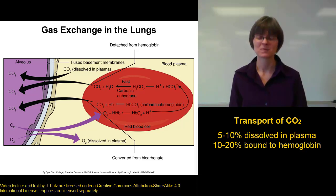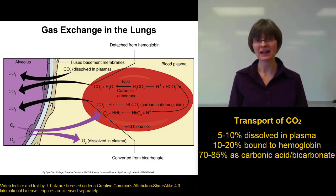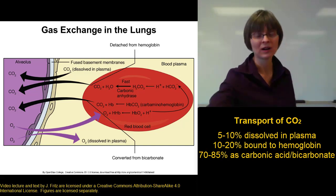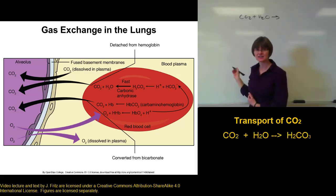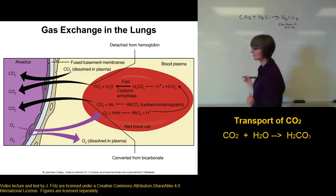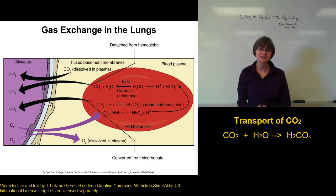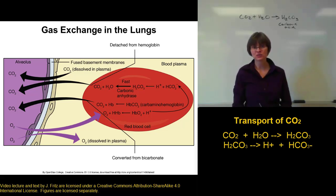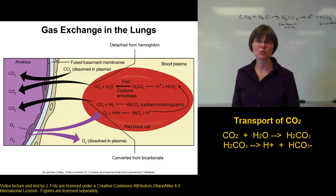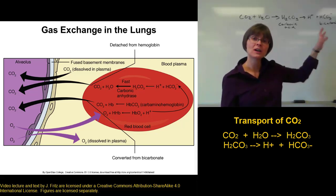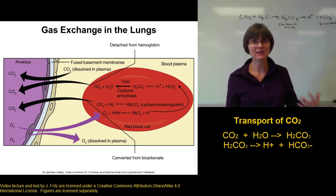The majority of the carbon dioxide in your blood is found in the form of bicarbonate or carbonic acid. When we mix carbon dioxide and water, we make carbonic acid, H2CO3. Carbonic acid is an acid because it releases a hydrogen ion, and then we're also left with a bicarbonate ion. Remember that having a hydrogen ion is going to affect the pH. So it's this mechanism — the way carbon dioxide combines with water to make carbonic acid — that is why carbon dioxide has such an effect on pH.